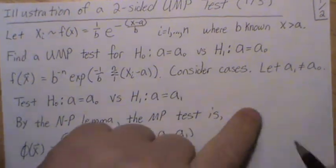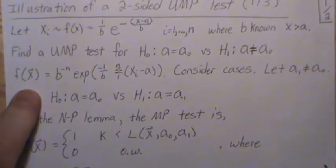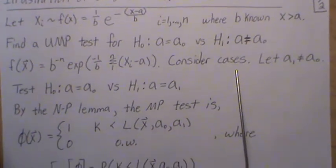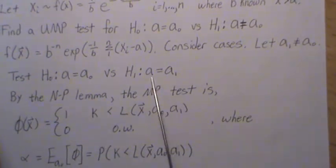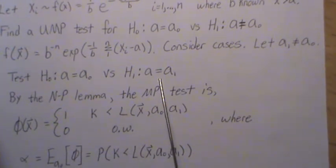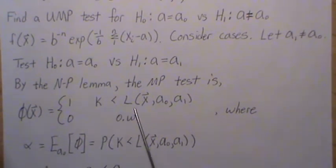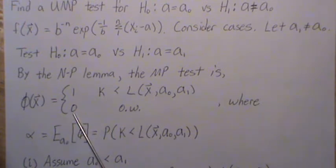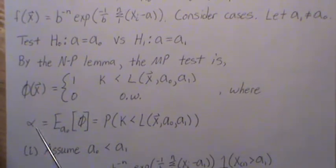The joint density is the product of the individual densities. Let's consider cases first — let A1 not equal A0, and let's test this simple versus simple hypothesis test. By the Neyman-Pearson lemma, the most powerful test is where the likelihood ratio is above some constant k. We reject when that holds, and otherwise we do not reject. This is our test function, where the constant k is determined by the alpha equation.